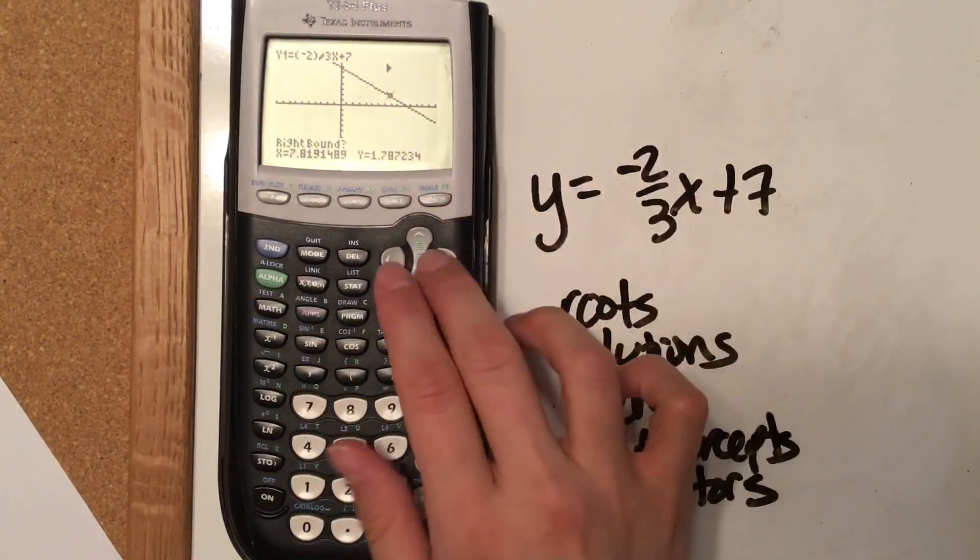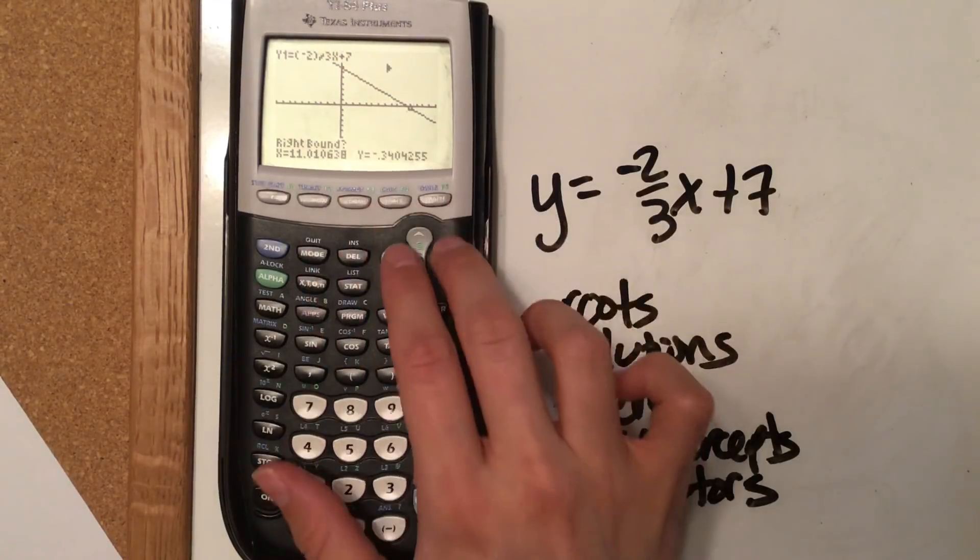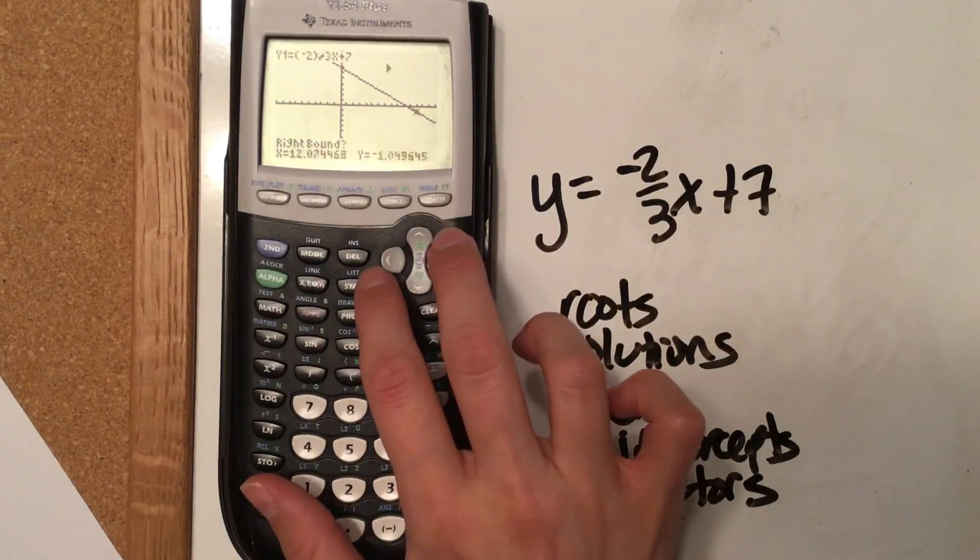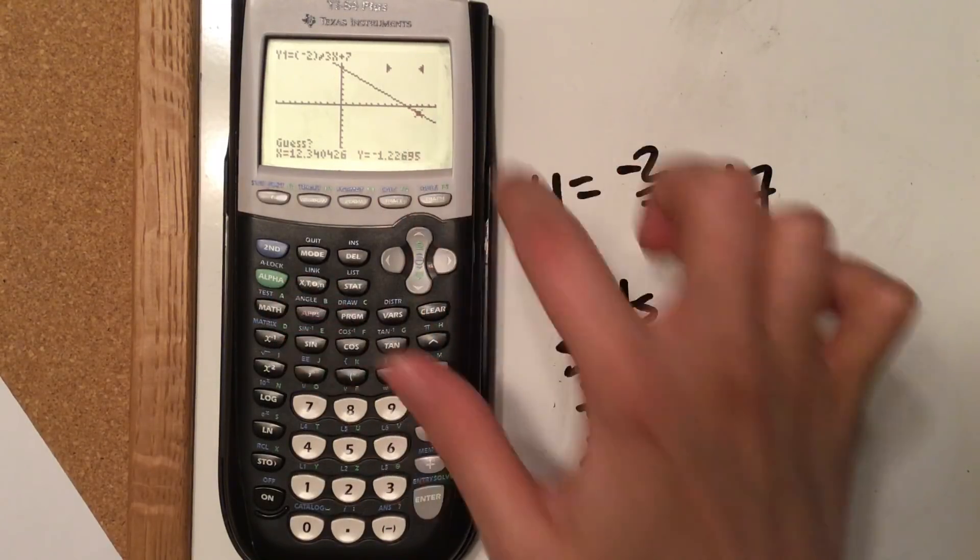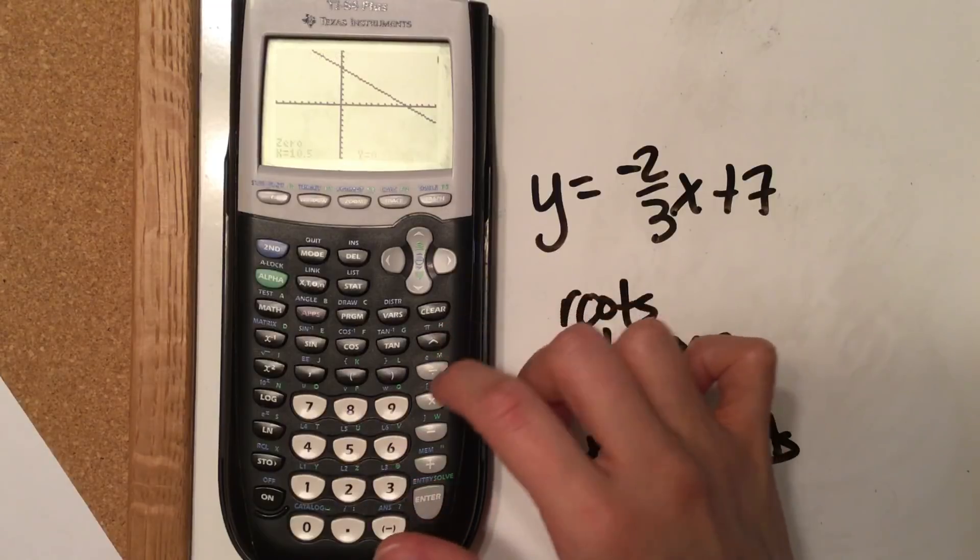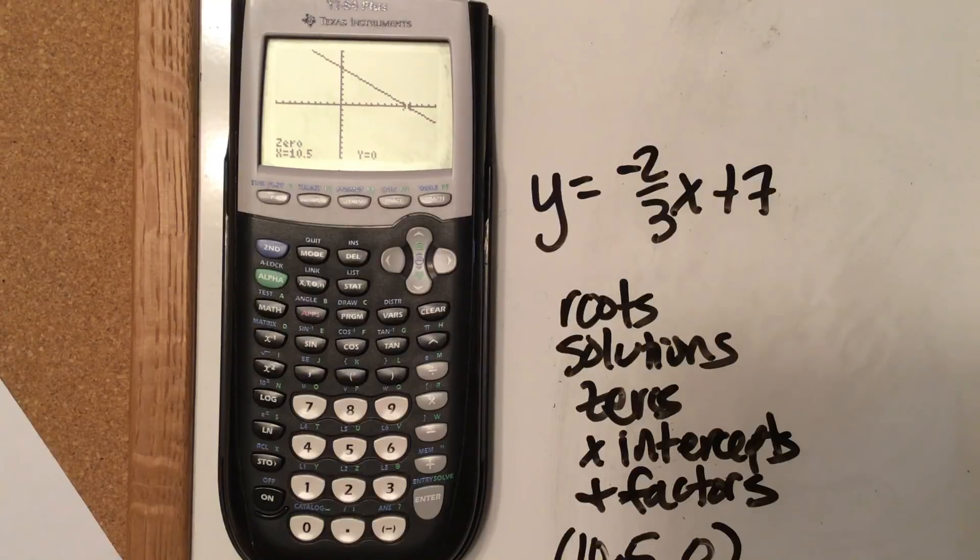And then notice it puts an arrow. It marks where that spot is. And then it now is asking to go to the right. So I'm going to move over and hit Enter. And notice that between the arrows is where the x-intercept happens. So I'm going to hit Enter. And then our x-intercept is 10.50. So then we can just write that our x-intercept is that. And that gives us what our x-intercept is.